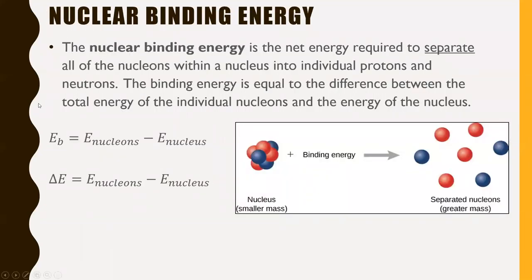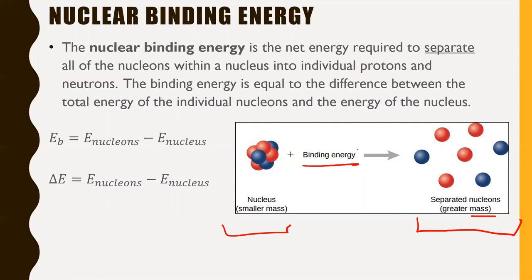Nuclear binding energy is the net energy required to separate all of the nucleons within a nucleus into individual protons and neutrons. The binding energy equals the difference between the total energy of the individual nucleons and the energy of the nucleus. When the nucleons are all separated, they have greater mass than they do when they're together. Mass and energy are two sides of the same coin — both are representations of the same essential property of the universe. So the nucleus is held together by something called binding energy.